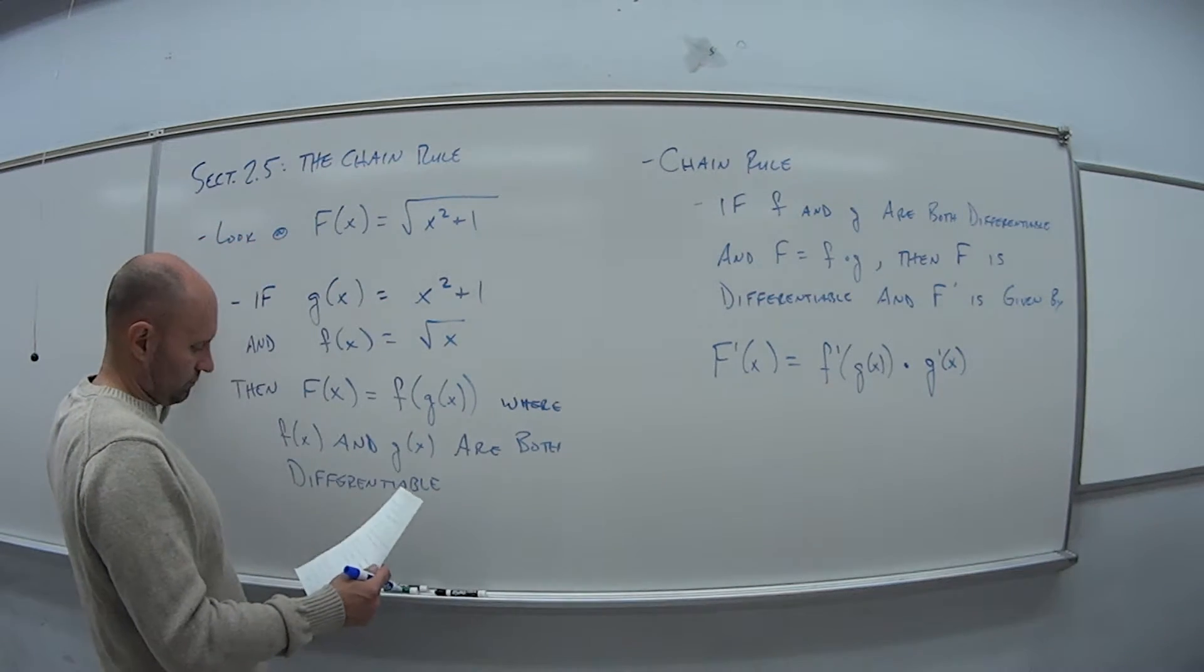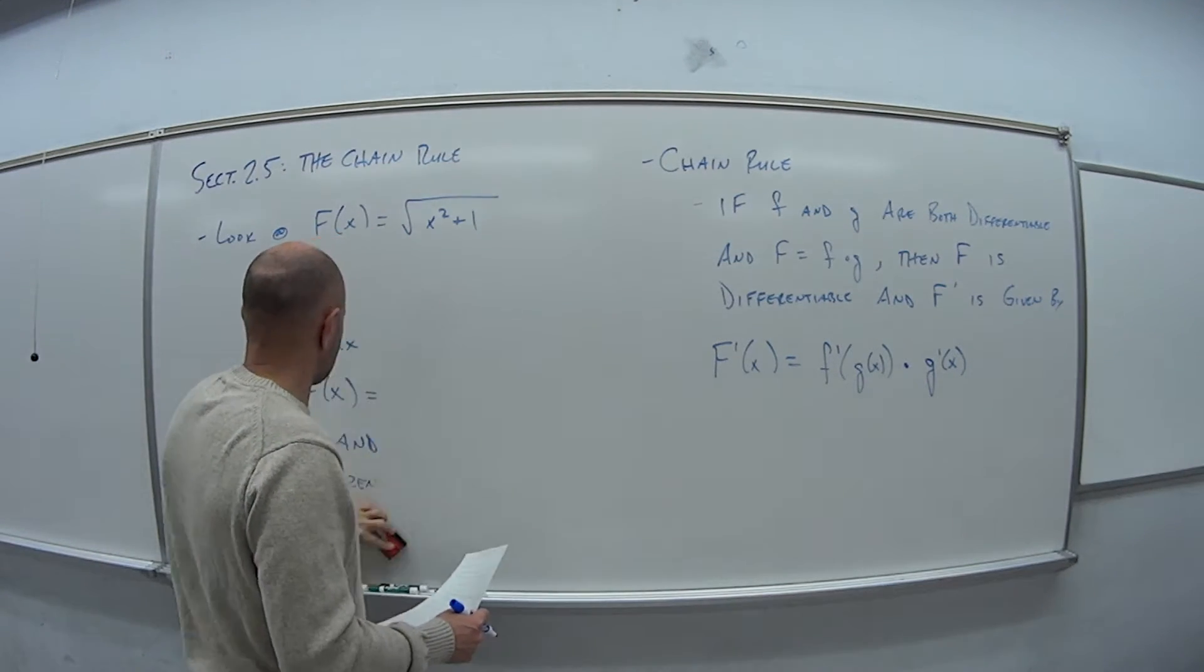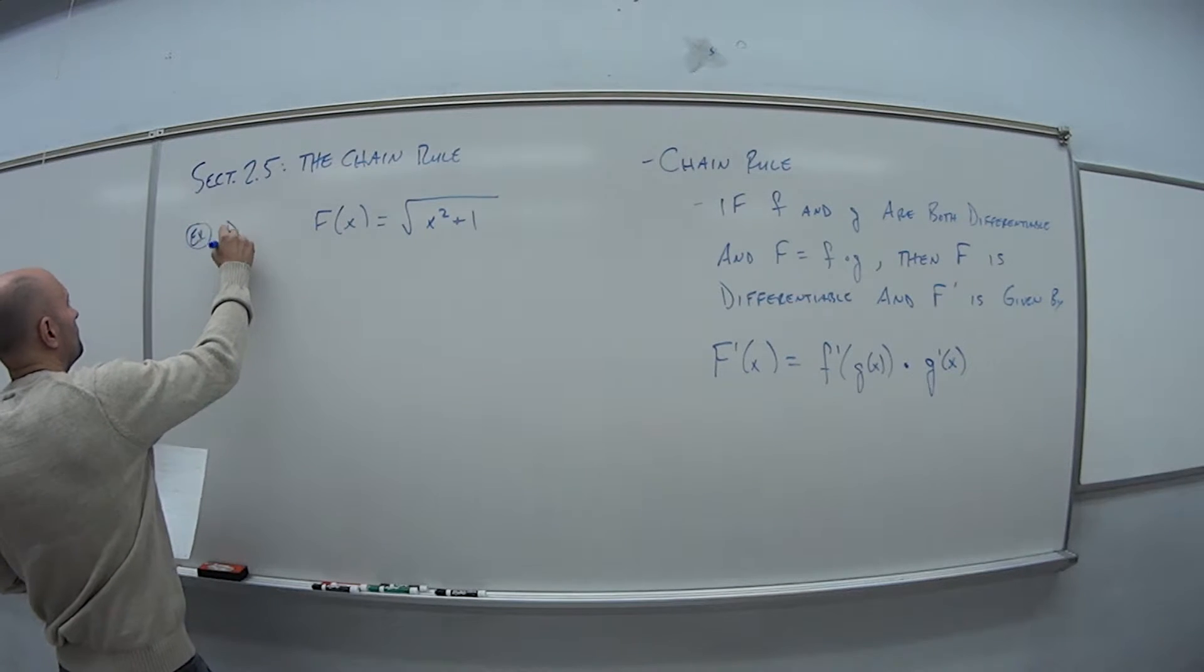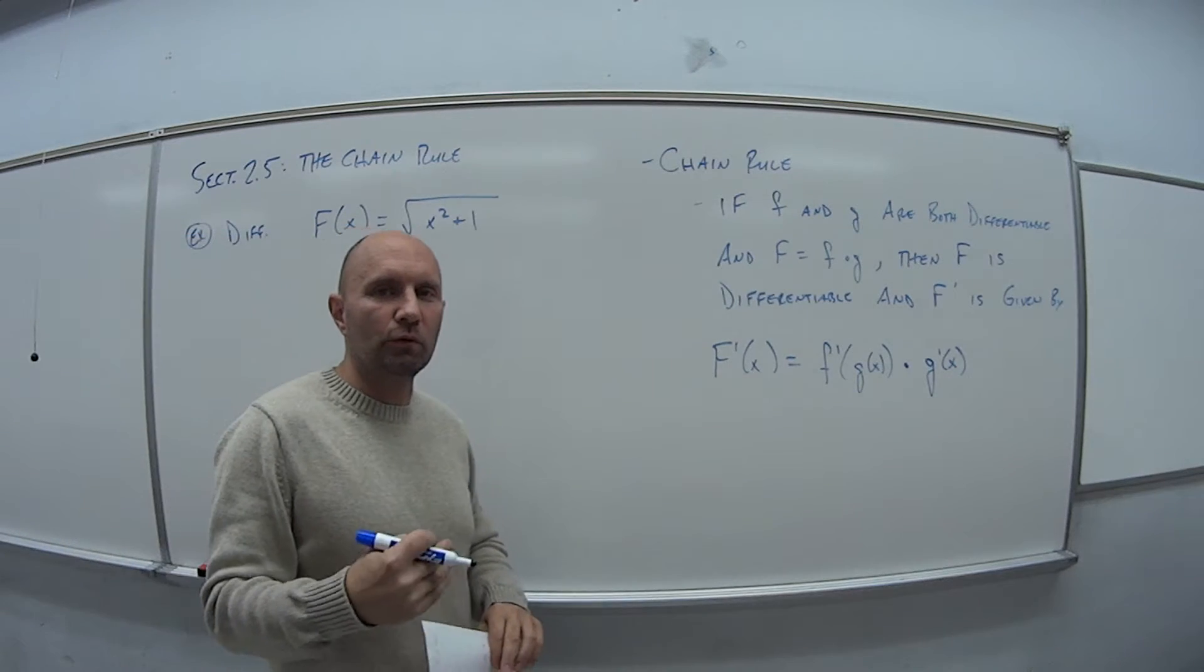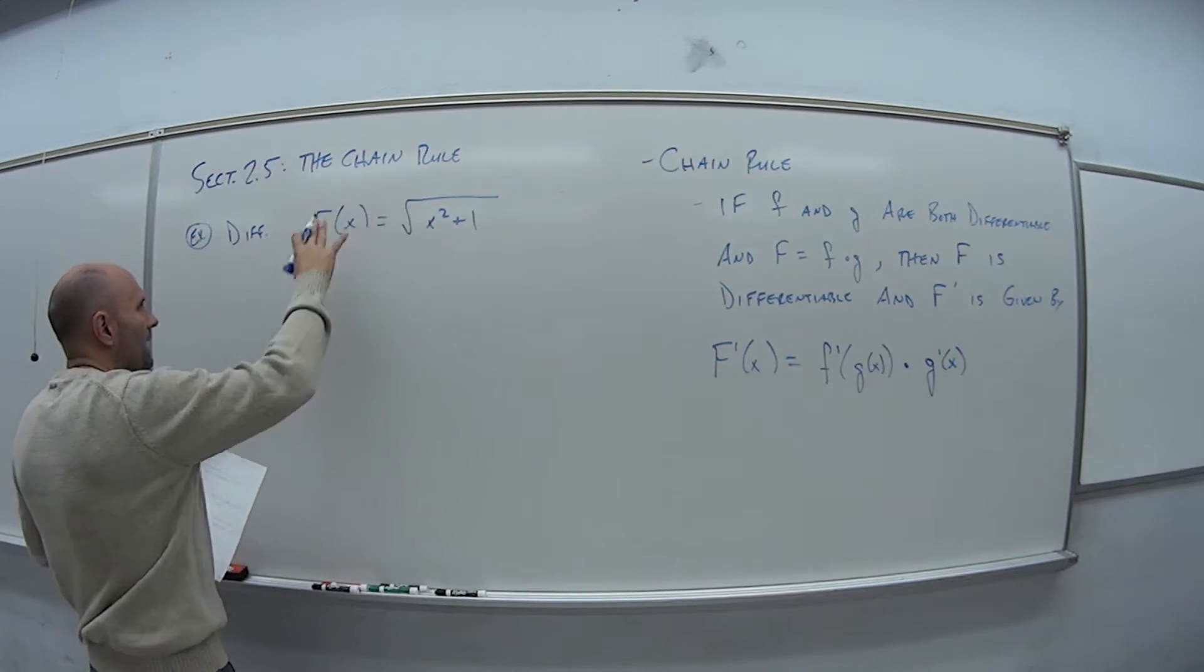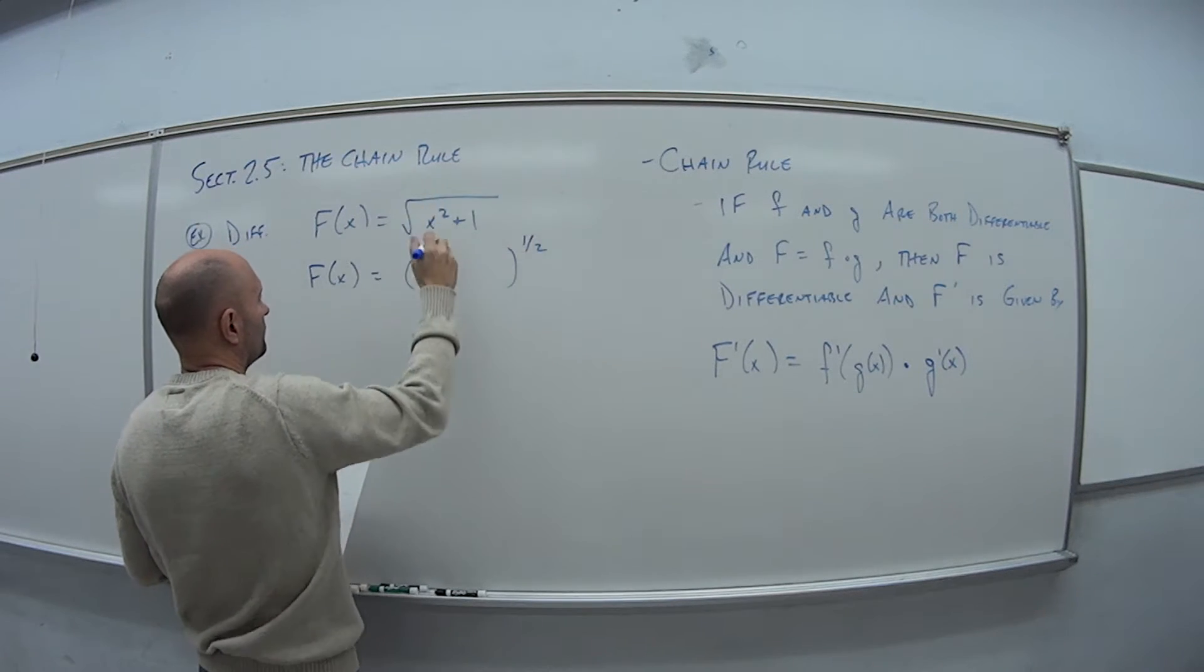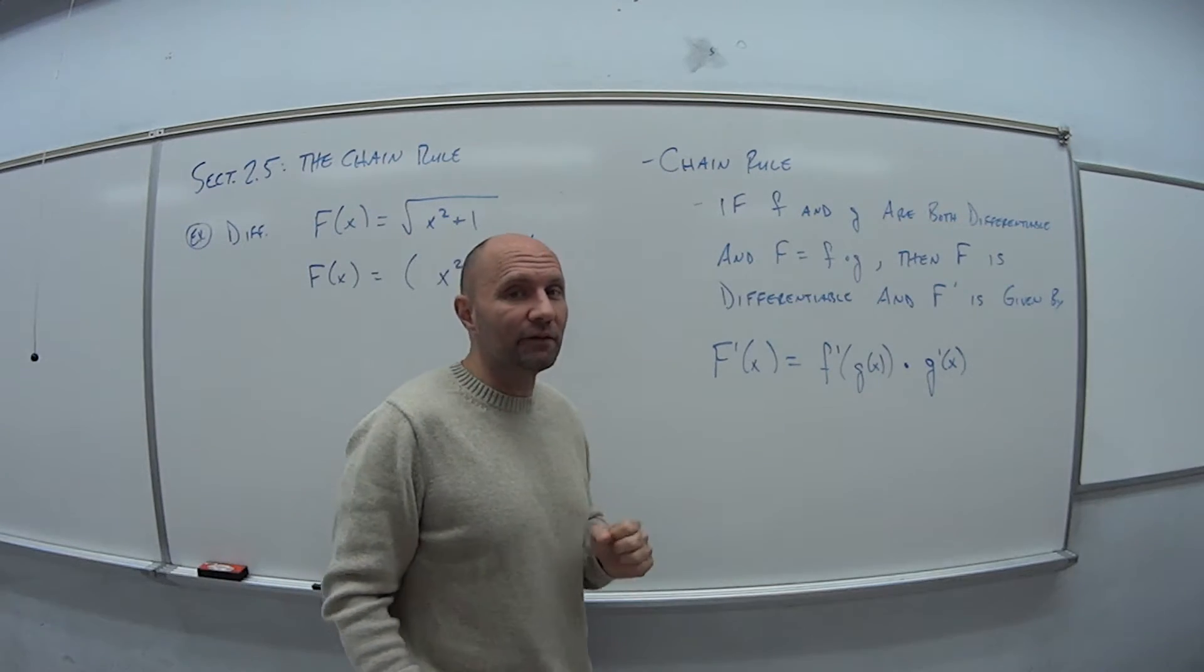So let's actually do this one here. So now let's call this an example. And we want to differentiate this f of x, which is the square root of x squared plus one. So now I am going to rewrite this using my exponents for roots, so this whole thing is to the one-half power, and then x squared plus one on the inside.